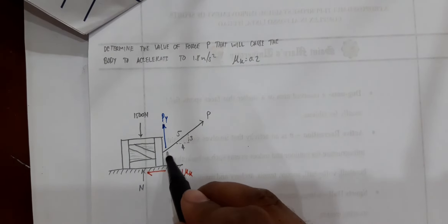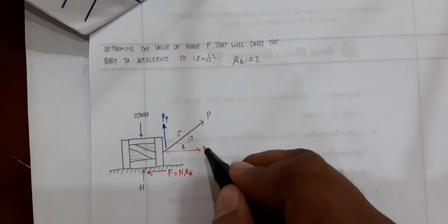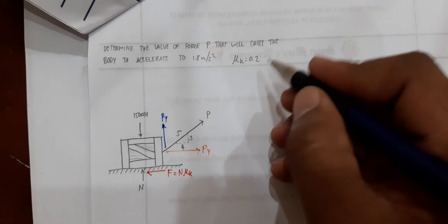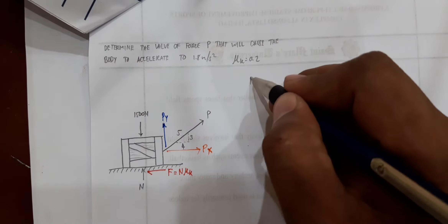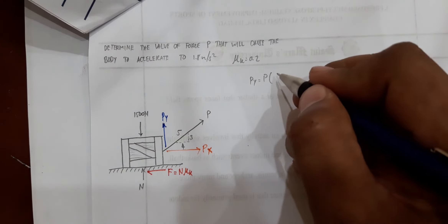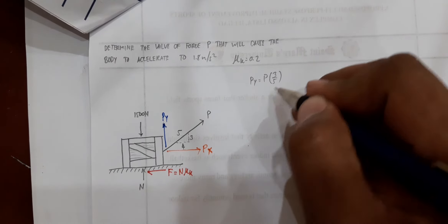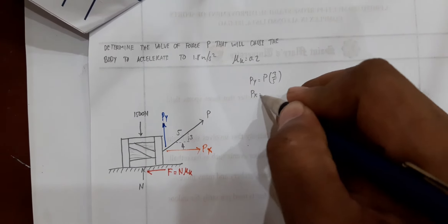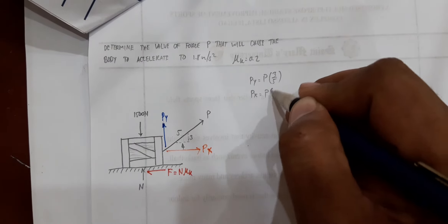You also have your horizontal component for force P, that would be PX. So recalculating: PY is equal to P times 3 over 5, and PX is equal to P times 4 over 5.